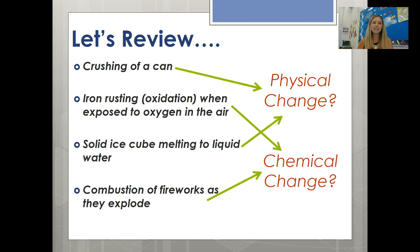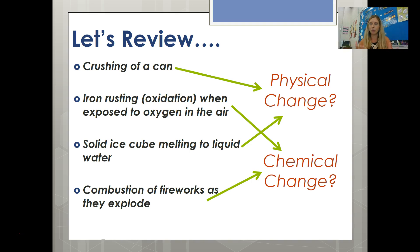Let's see how you did. The crushing of a can would be an example of a physical change — the material that makes up the can is still the same. Generally speaking, a physical change is something that could be reversed, so you could uncrush a can and make it look almost exactly like it did before.